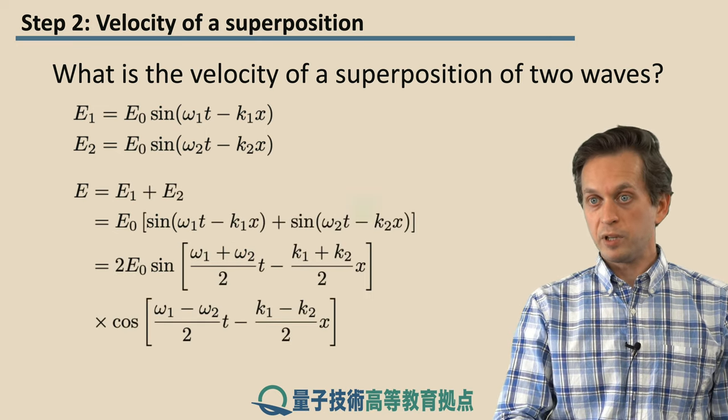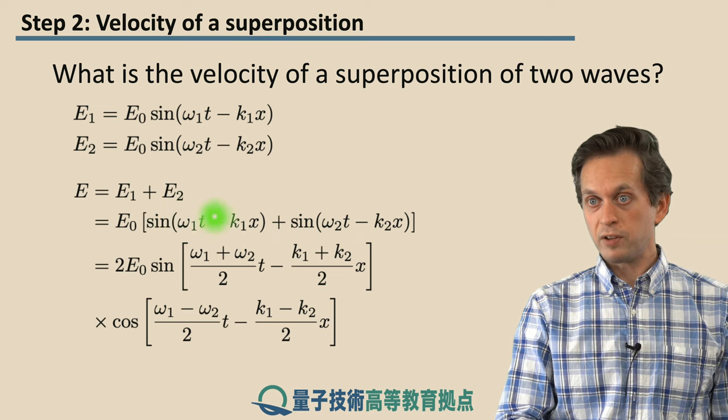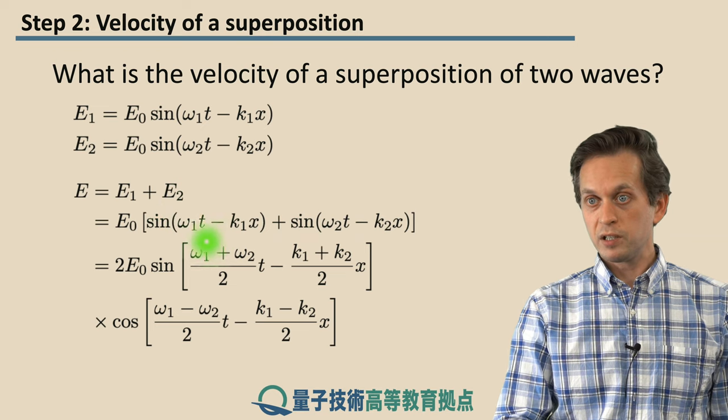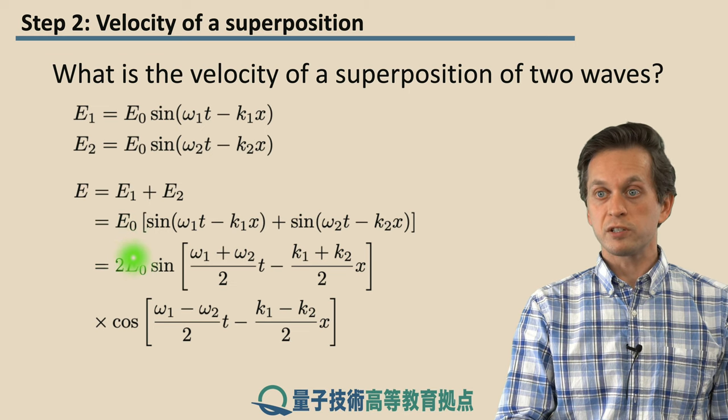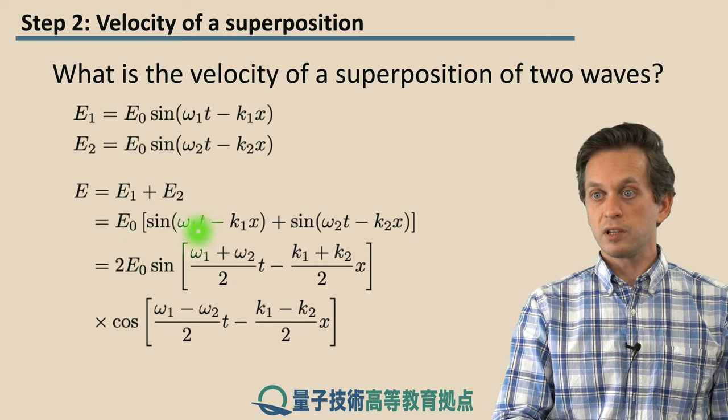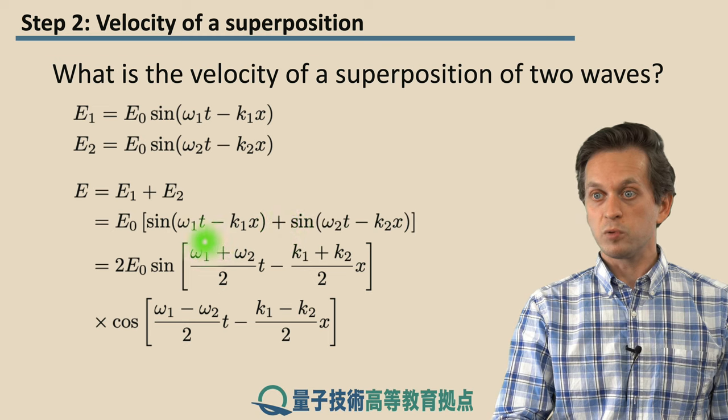When we add them together, we arrive at the following expression. Here, both of them have same amplitude, so we can just take out E0 and write down the two waves in this form.